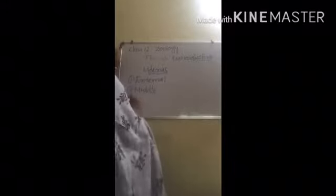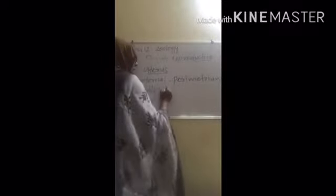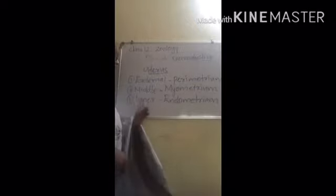The uterus is made up of three layers. The external layer is a thin membranous layer known as perimetria. The middle layer is made up of smooth muscles and is known as myometria. The inner layer is totally glandular in appearance and is known as endometria.